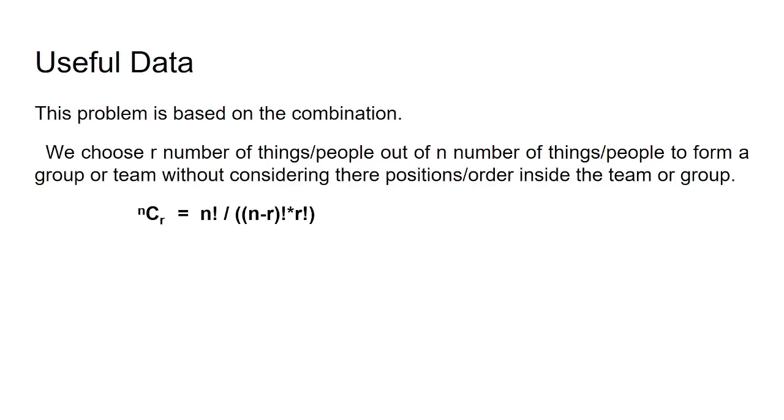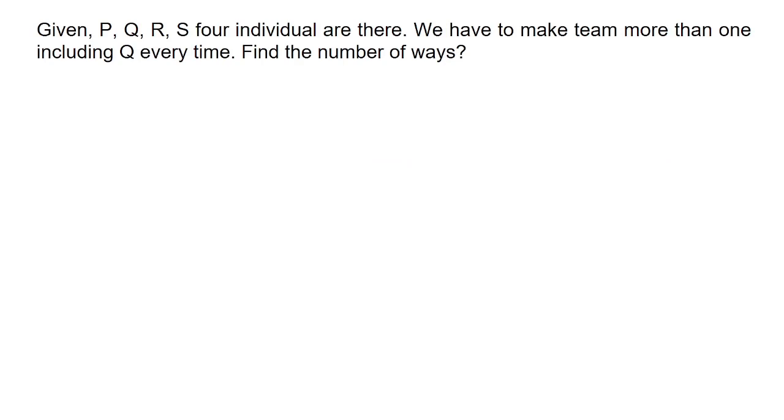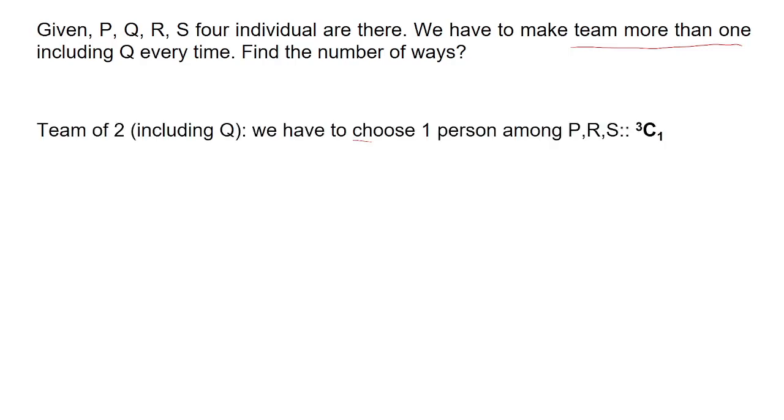Let's solve this problem. Given P, Q, R, S are four individuals, we have to make a team containing at least two people, and every time in that team Q must be there. So we have to find the number of ways to form this group or team.